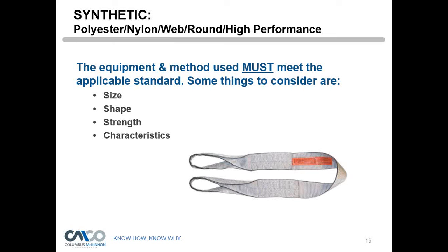Question: If the grade is no longer on the chain but you know for a fact what grade it is, what do you do? Answer: If you know it's a grade 80 chain but all the markings are worn off, I would take it out of service. Or you can continue to use it at a reduced working load limit — equal to grade 30, since that's what the DOT officer will assign. So they would really need to replace it. Correct.